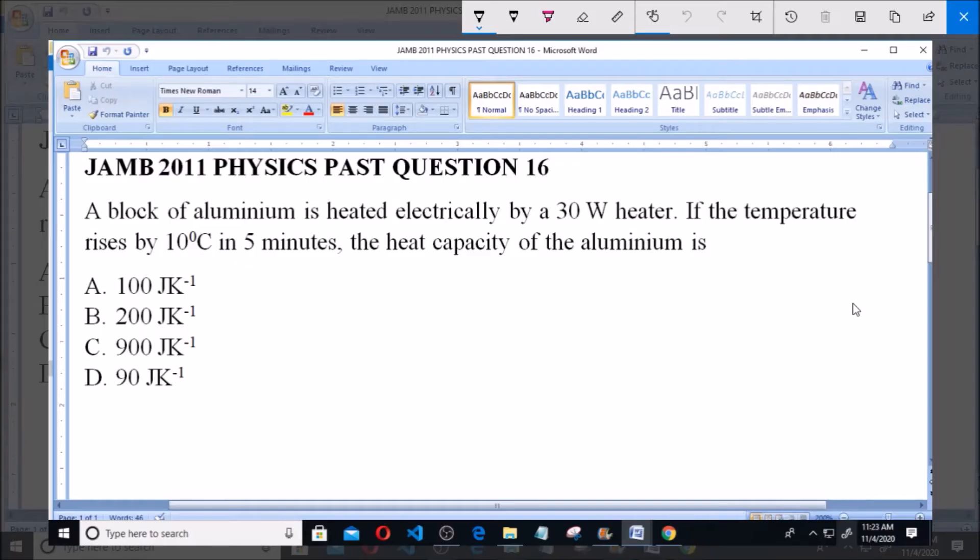Hello and welcome, I will be answering JAMB 2011 physics past question 16. A block of aluminium is heated electrically by a 30 watt heater. If the temperature rises by 10 degrees Celsius in 5 minutes, the heat capacity of the aluminium is: A, 100 joules per Kelvin; B, 200 joules per Kelvin; C, 900 joules per Kelvin; D, 90 joules per Kelvin.